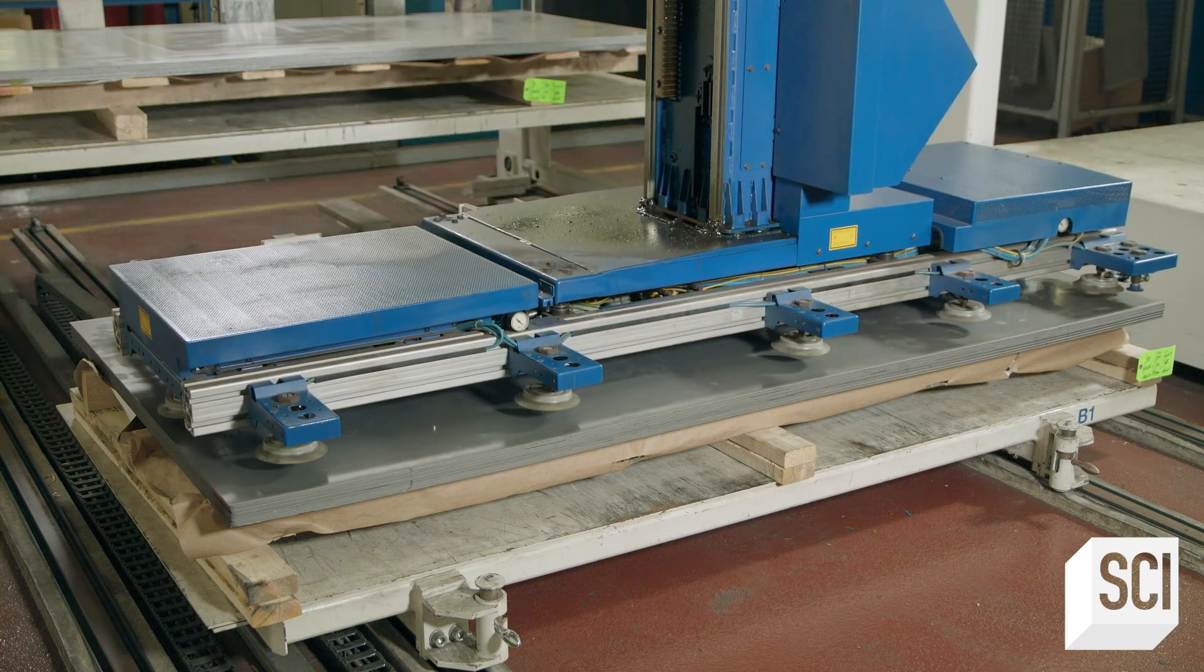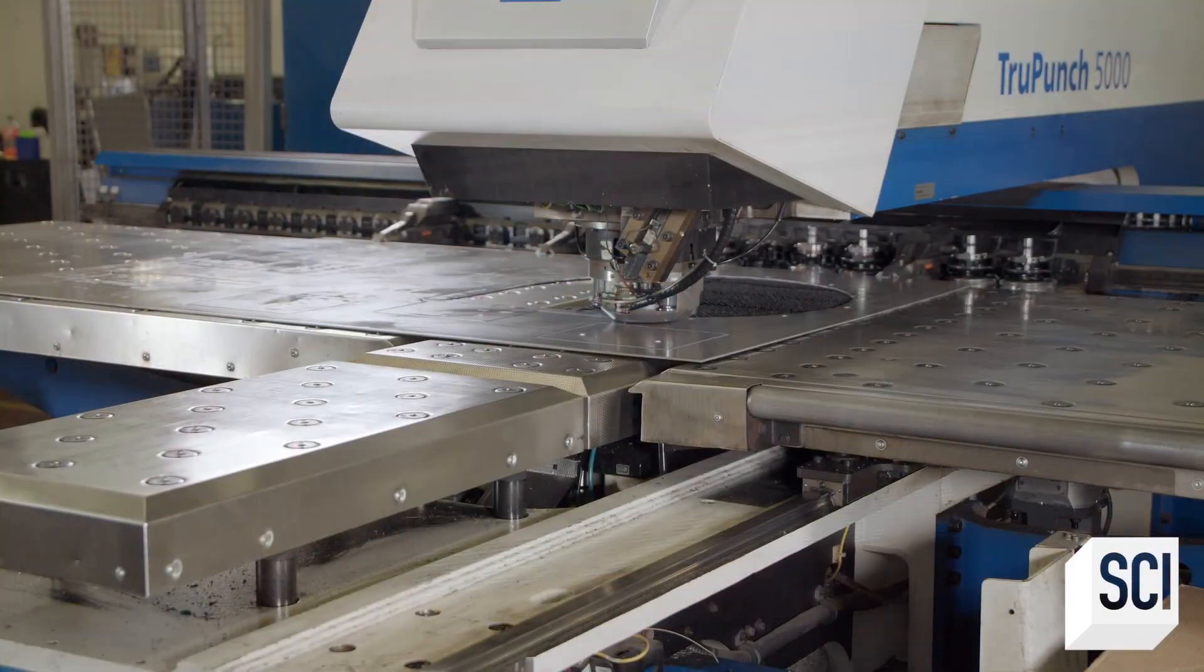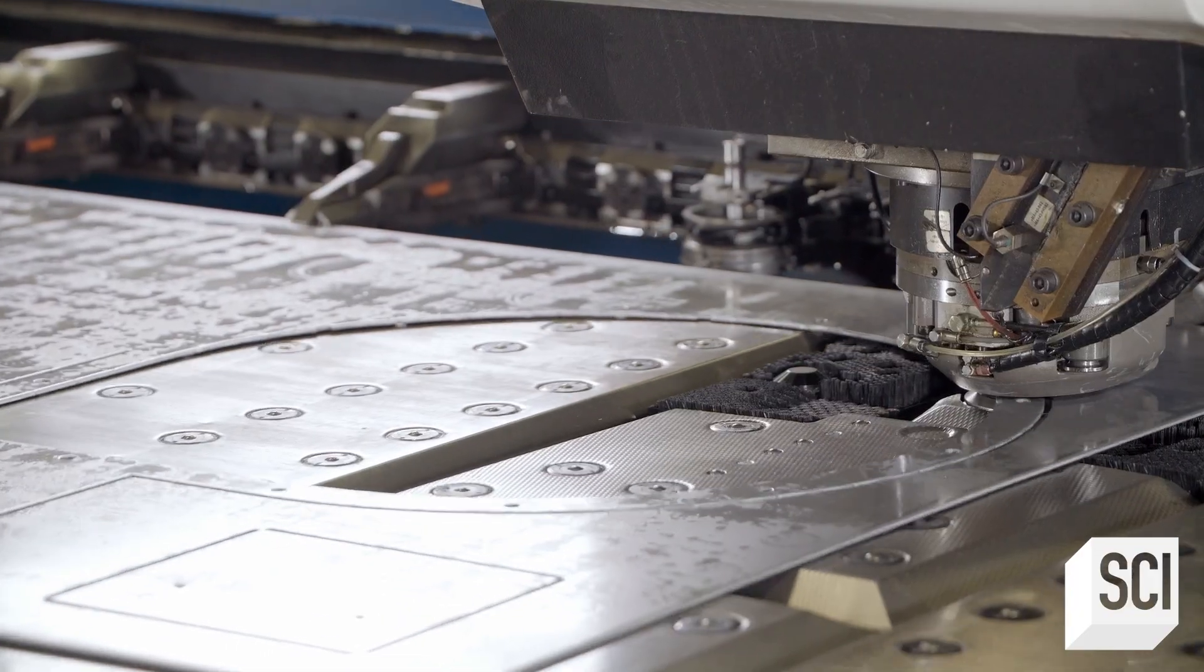The machine is comprised of about 100 different parts, all cut from 0.11 inch thick sheets of steel using this computer-guided punch press.